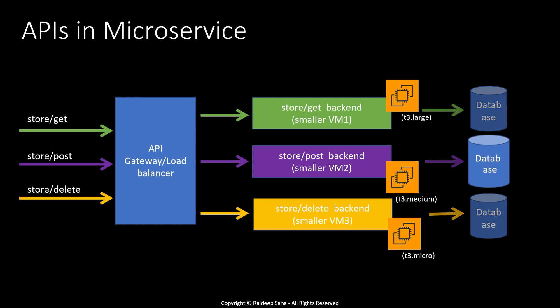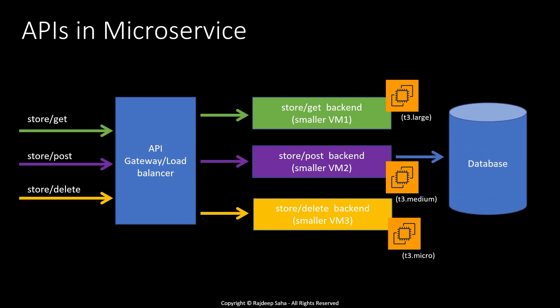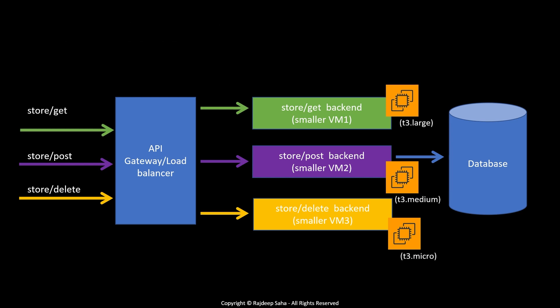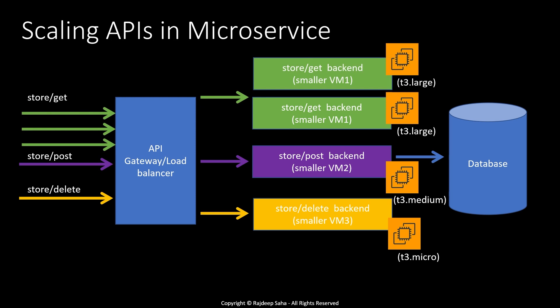Going back to our previous example where the code bases are separate but using the same database — if store/get traffic increases, only the virtual machine running the store/get backend needs to scale, not all three. If you are using a single database for multiple microservices, keep in mind that as the microservices scale, the database should be able to handle the increased connections. Generally, there are techniques to optimize database reads, such as using read replicas and caching.